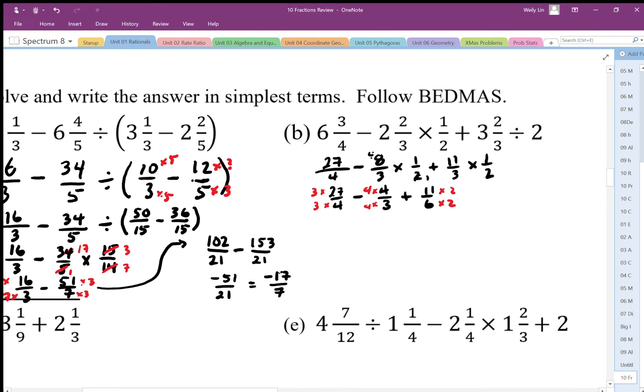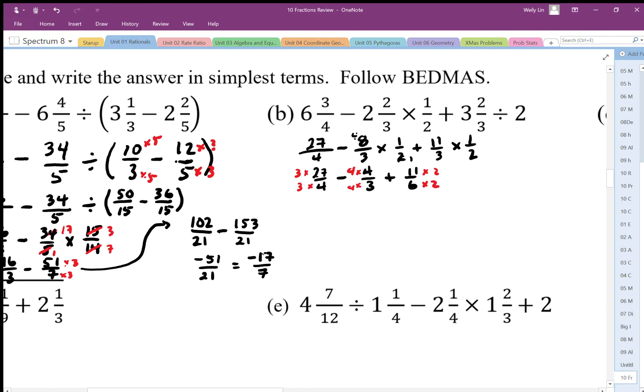And then we can work out that next step. So 3 times 27 is going to be 81 over 12 minus 16 over 12 plus 22 over 12.